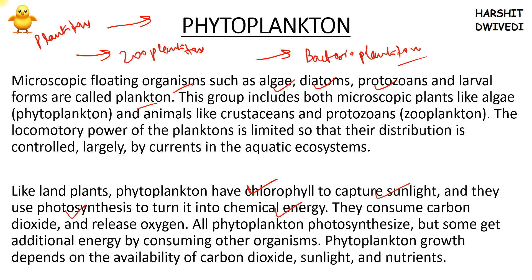What is zooplankton? Zooplankton feed on phytoplankton and are not capable of doing photosynthesis — they depend on phytoplankton for their food. Some examples of zooplankton are protozoans and crustaceans. When zooplankton feed on phytoplankton, small fishes feed on zooplankton. So basically, phytoplanktons are eaten by zooplanktons, zooplanktons are eaten by small fish, small fish are eaten by bigger fish, and bigger fish are eaten by whales and dolphins. So two classifications of planktons — phytoplankton and zooplankton — are now clear.